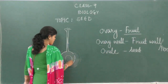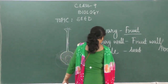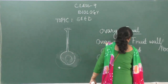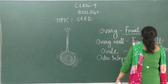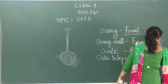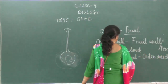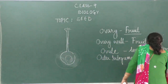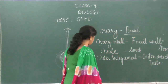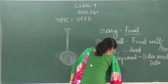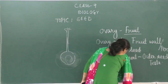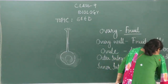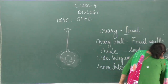The outer and inner integuments are parts of the ovule. The outer integument changes to the outer seed coat, which we call the testa. The inner integument changes to the inner seed coat, which we call the tegmen.